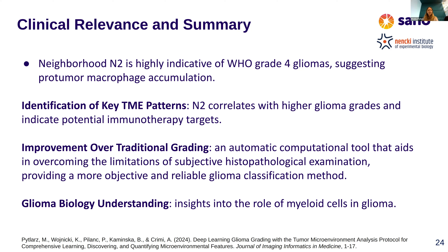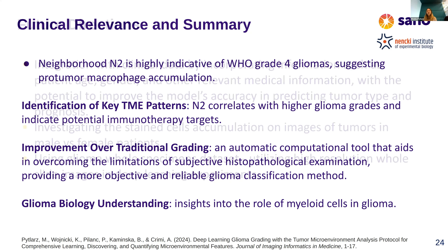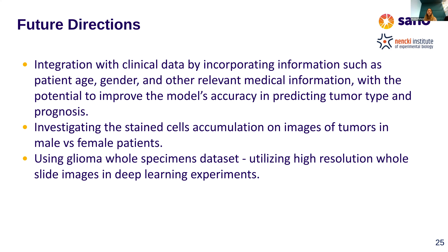Future directions for this work include using glioma whole specimen images — switching from tissue microarrays to whole slide images and to different staining. We will explore other approaches, probably including patient age, gender, and other tabular information, with the potential to improve the model's accuracy in predicting tumor type. We may also add a deep learning component to show differences in glioma between men and women.